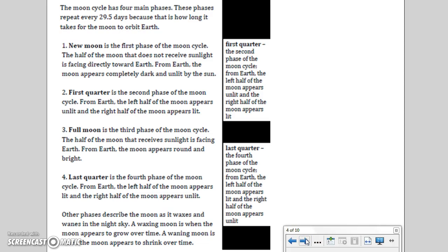The moon cycle has four main phases. These phases repeat every 29.5 days because that is how long it takes for the moon to orbit Earth. New moon is the first phase of the moon cycle. The half of the moon that does not receive sunlight is facing directly toward Earth. From Earth, the moon appears completely dark and unlit by the sun.